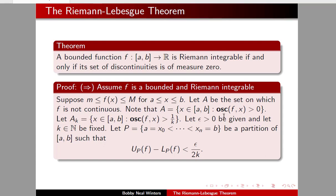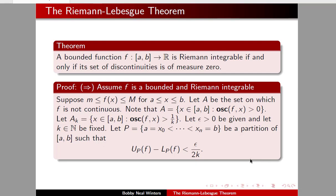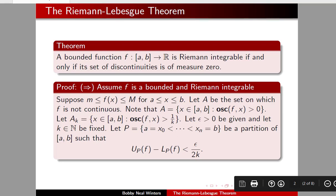We'll show that A sub k has measure zero. Let epsilon be greater than zero be given, and let k be a fixed element of the natural numbers. Let P be a partition of the closed interval [a, b] such that the upper Riemann sum of f and the lower Riemann sum of f are within epsilon over 2k of each other.